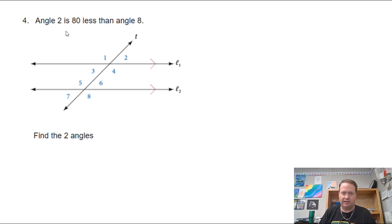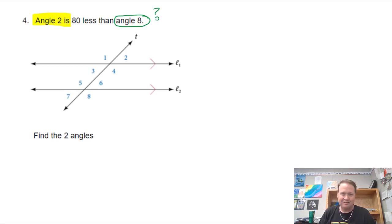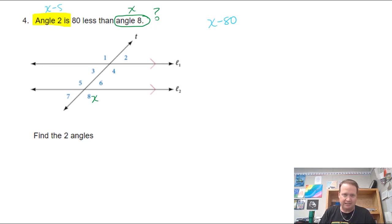Problem four: angle two is 80 less than angle eight. Since we don't know angle eight, let angle eight equal x. Then angle two is x minus 80. Looking at the diagram, angle eight is a large obtuse angle and angle two is a small acute angle — they are not congruent, so they must be supplementary and add up to 180 degrees.